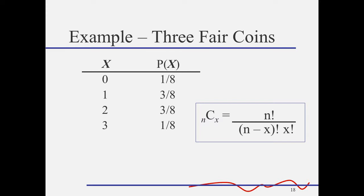How many ways can we choose one head out of three coins? There are three ways to do that. How many ways can we choose two heads? Three ways again. And just one way to choose all three coins to be heads. Because we have a fair coin, all the events in the sample space have an equal chance, and we can use that to find the probabilities.